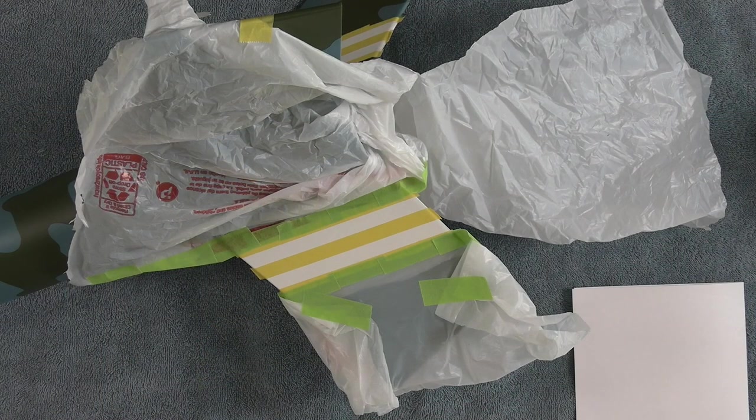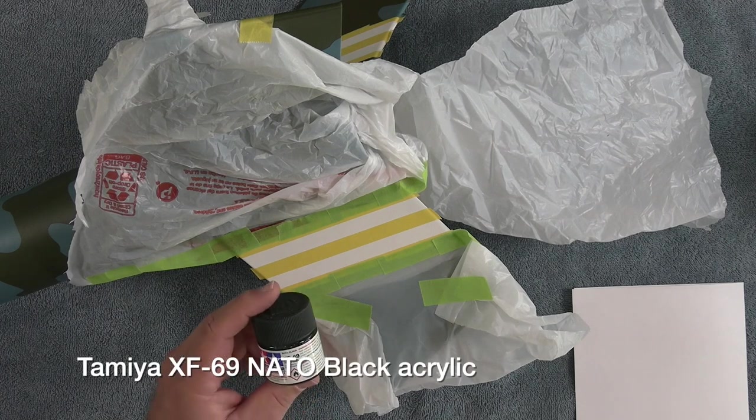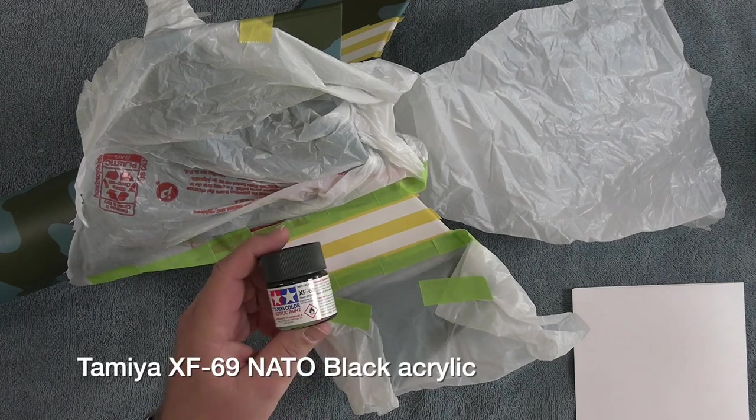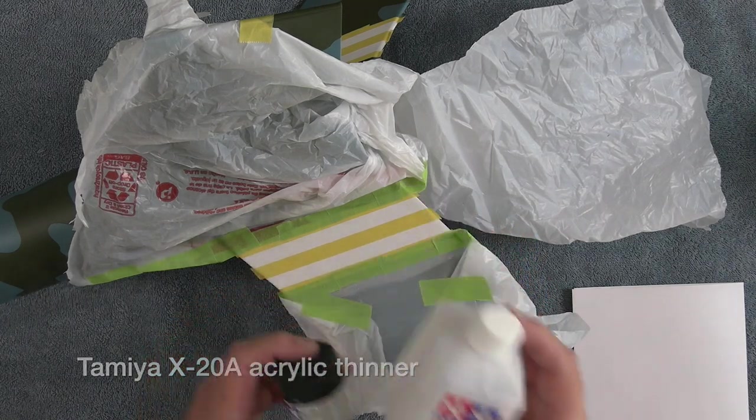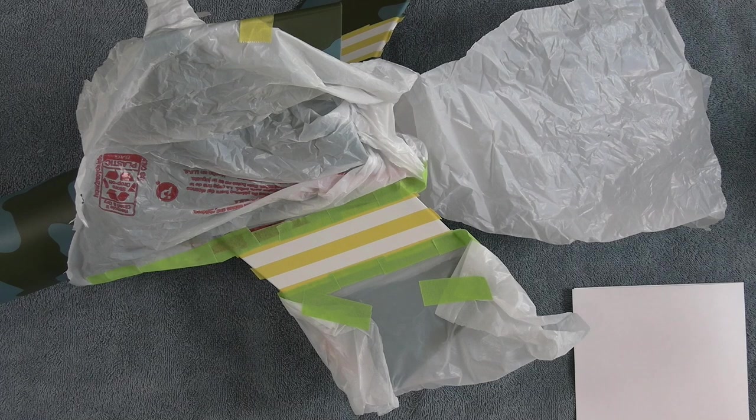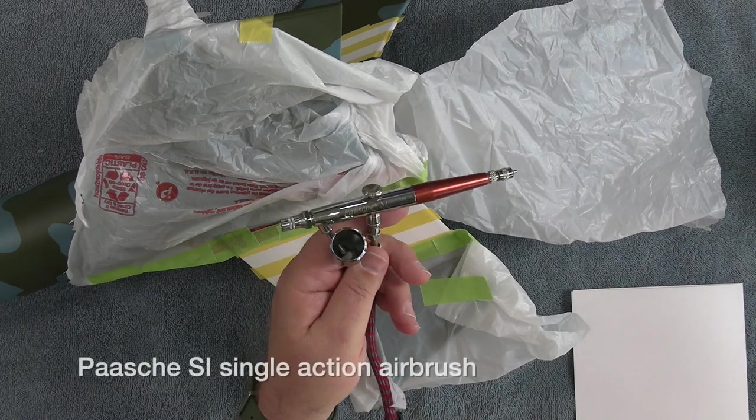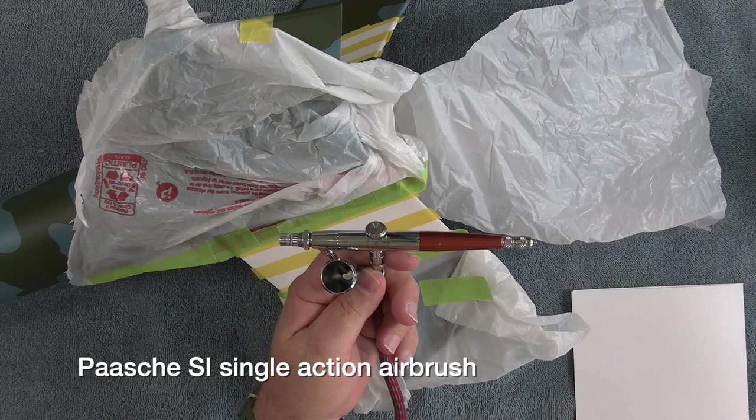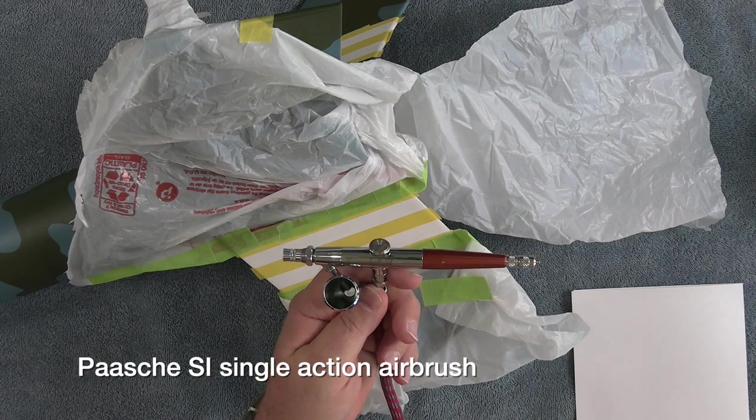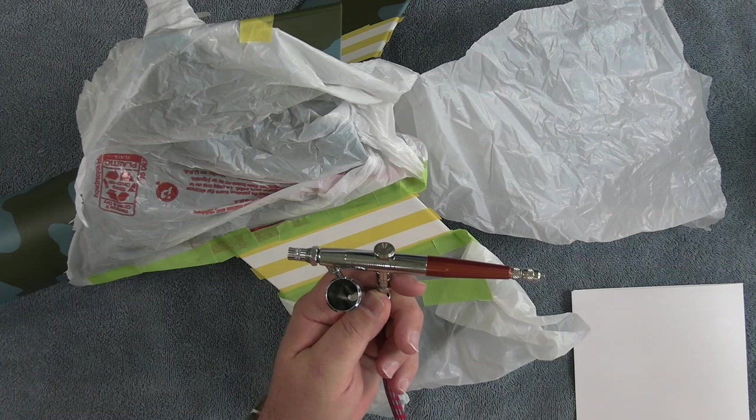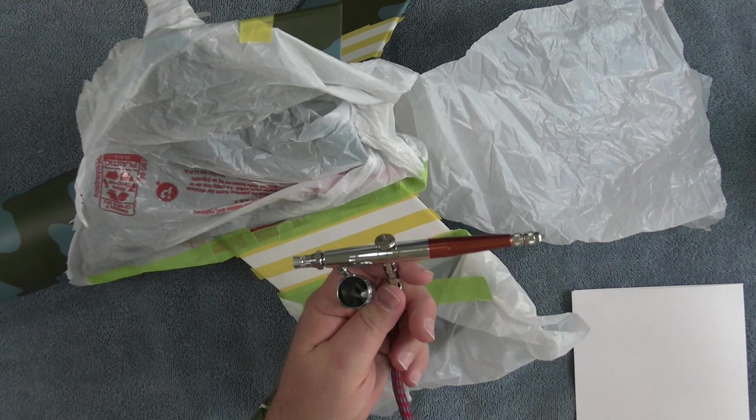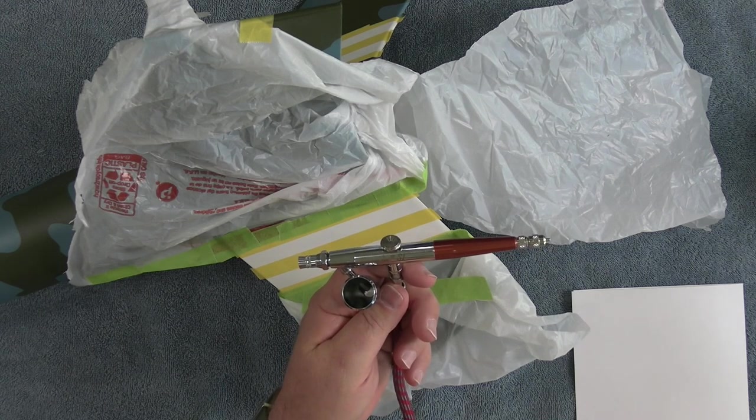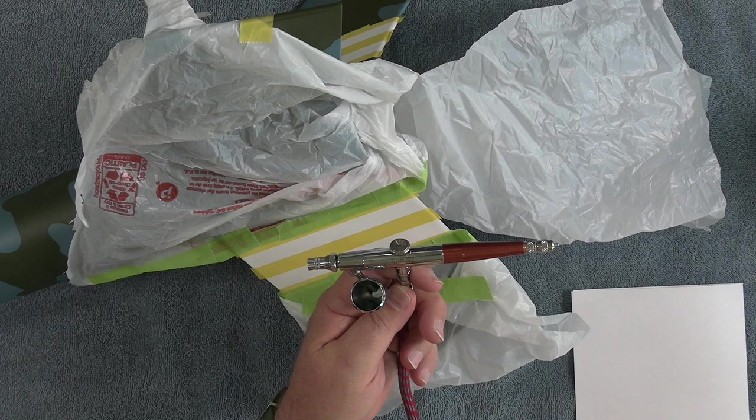It's time to paint the invasion stripes on our model and we're going to be using Tamiya XF69 NATO black acrylic paint to do that. That will be thinned out with the appropriate thinner for that paint. Now we will be using a Pache SI single action airbrush. Now this tutorial is not designed to be an introduction to airbrushing. There are plenty of other alternate guides to airbrushing out there on the web. I encourage you to go find them. In some of my earlier videos I've even touched on the basics.